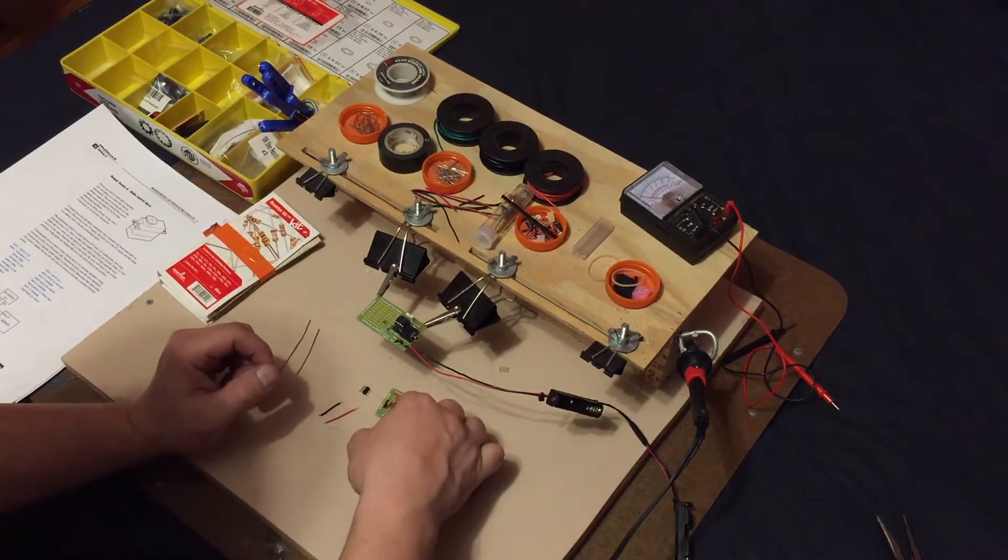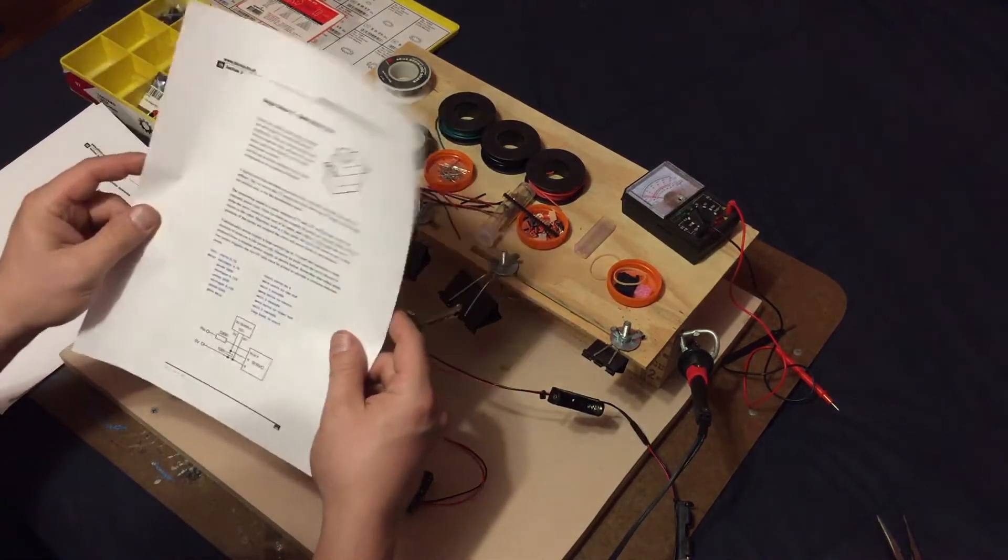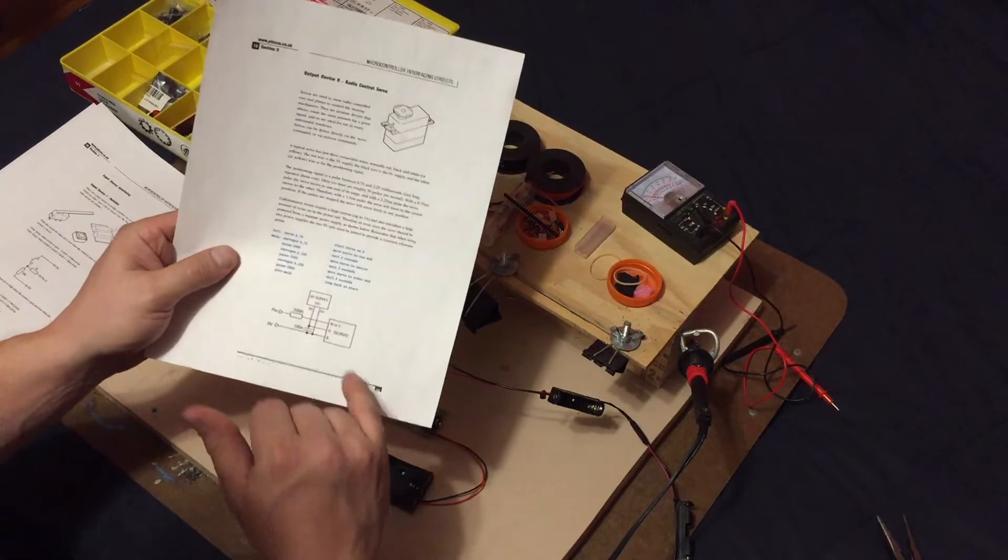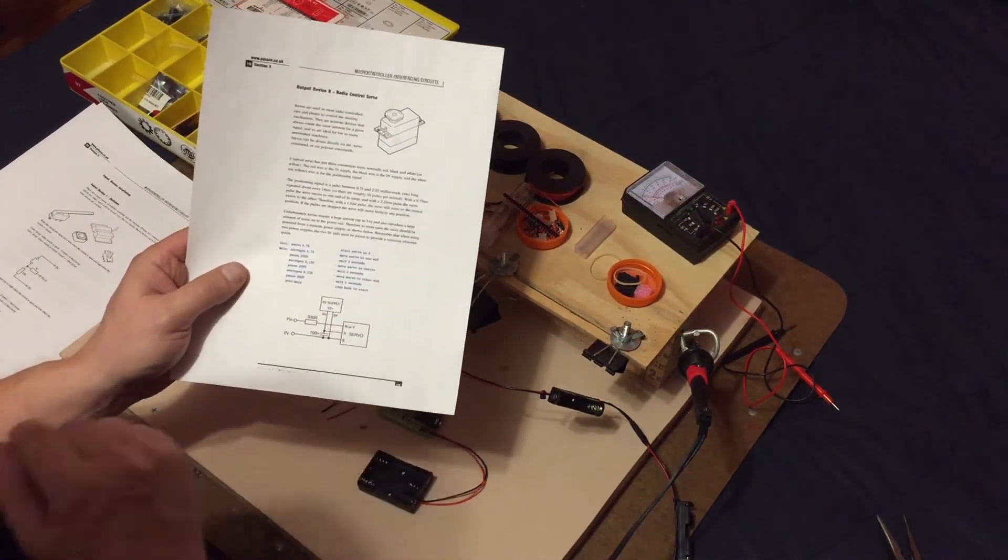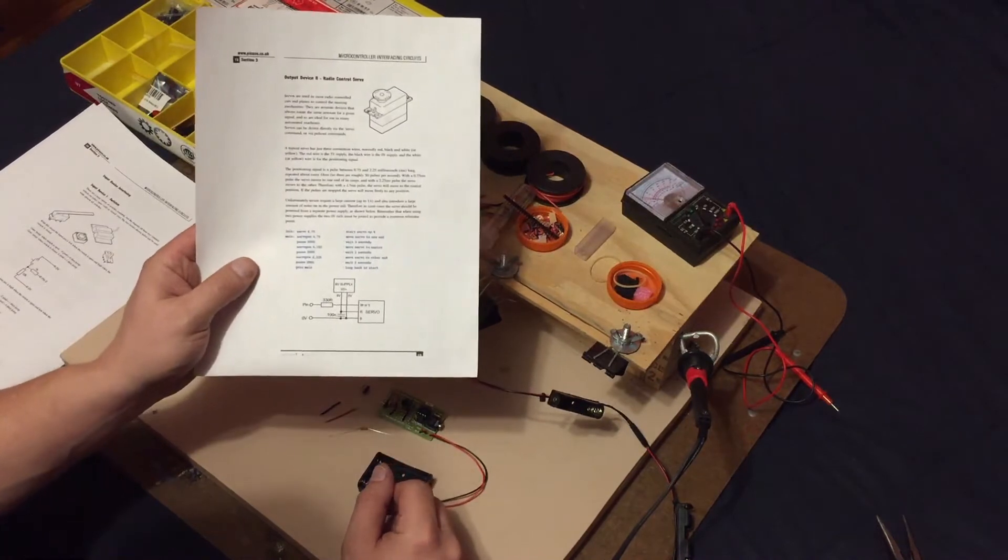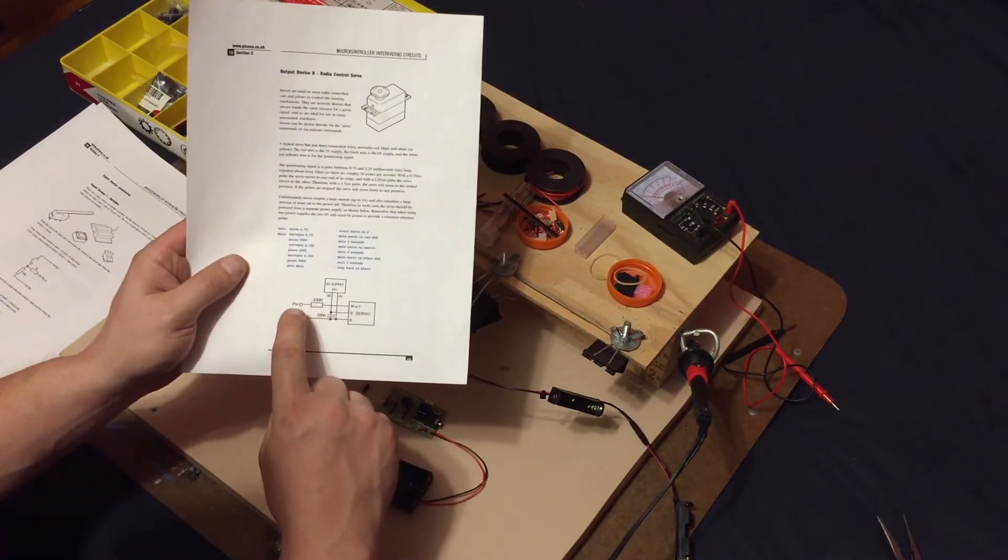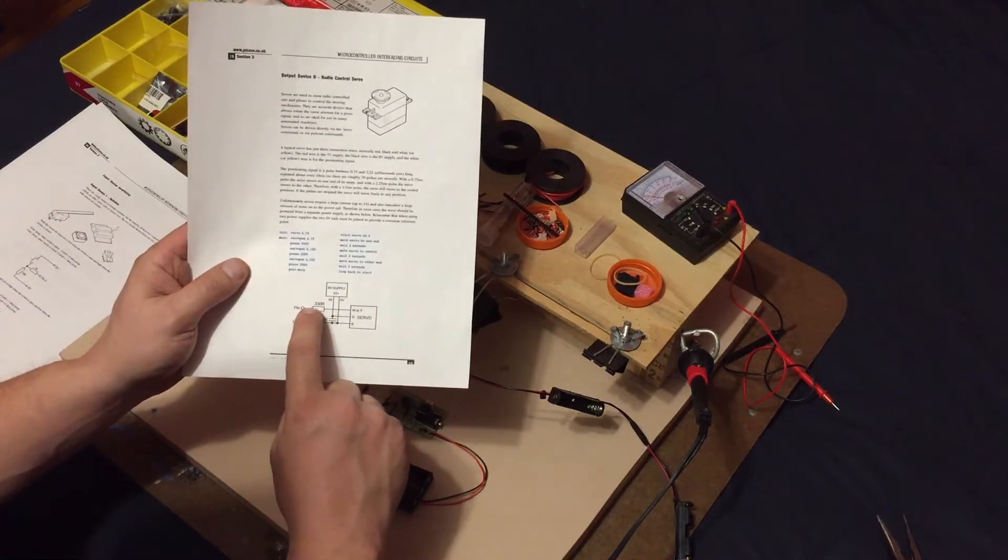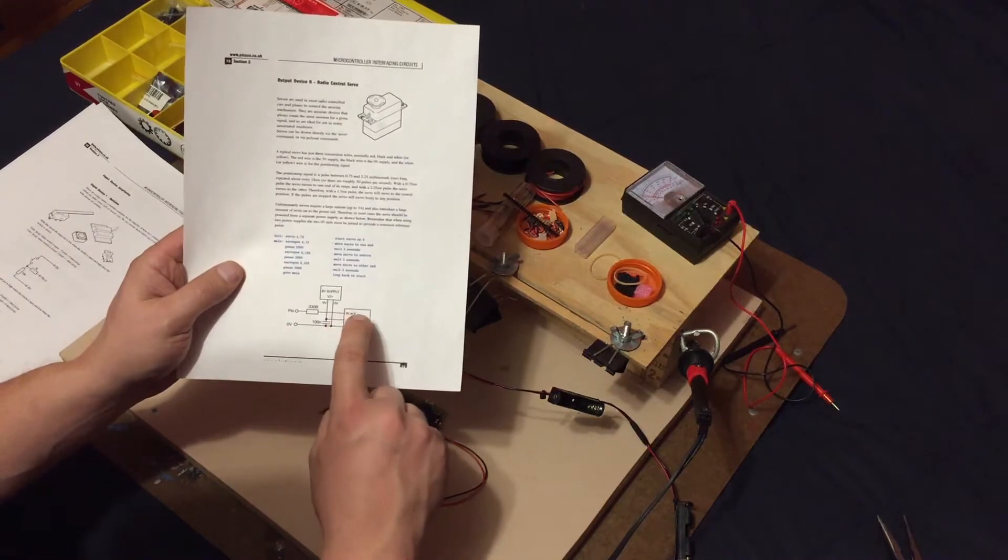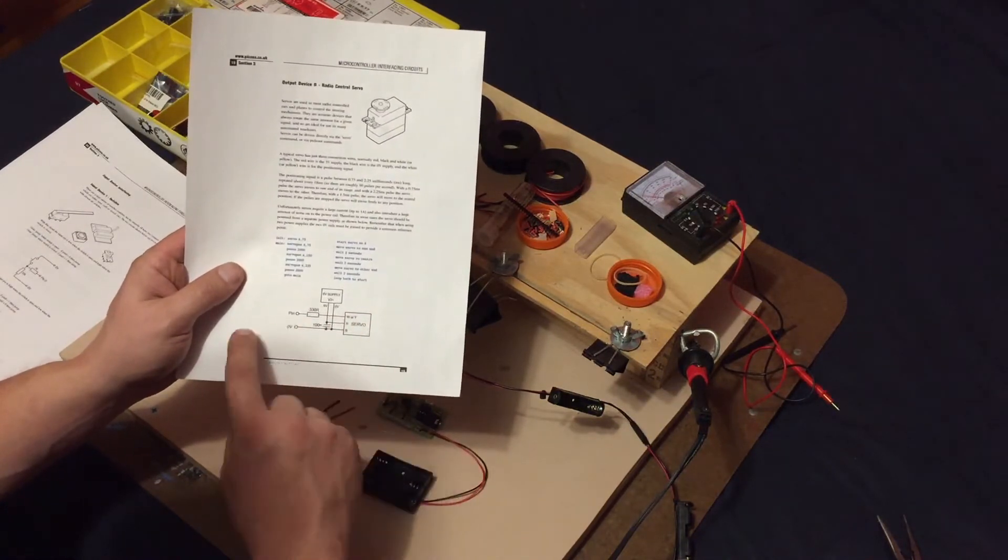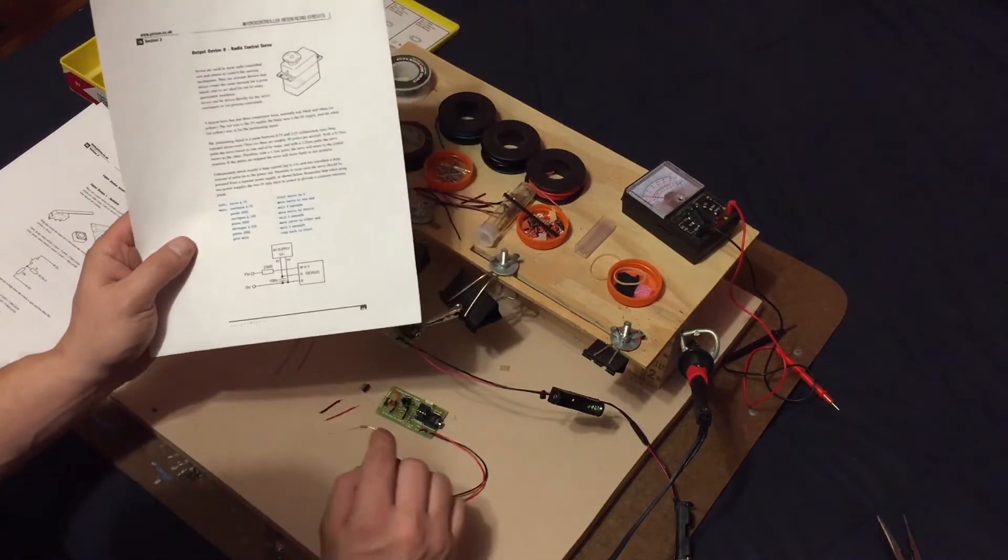And the reason I know that we need a 330 resistor is because we're using page 19 of our pickaxe PDF. Again, this will be linked in the description. We need to run the 330 resistor to the top of our servo, the white or yellow wire to our actual pin that's going to operate it.